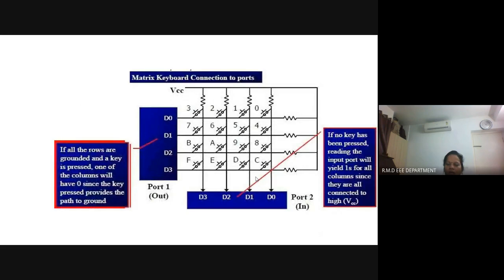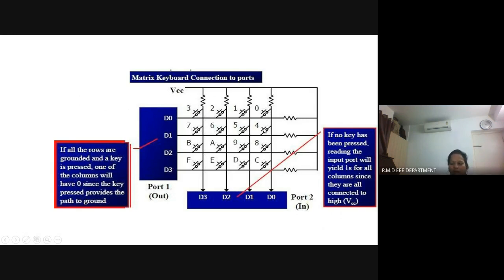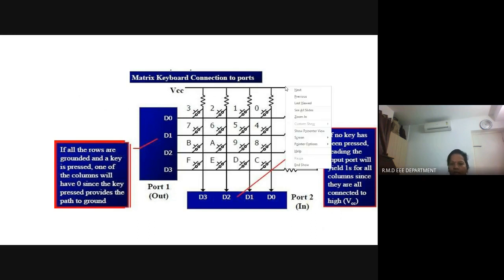Here we are going to consider a hex keypad. A hex keypad has numerals from 0 to 9 followed by A, B, C, D, E, F — that is why it is known as a hex keypad representation of a keyboard. For our explanation, I am going to consider a 4x4 matrix, which has 4 rows and 4 columns.